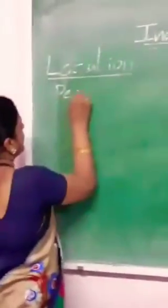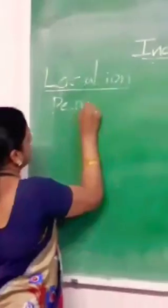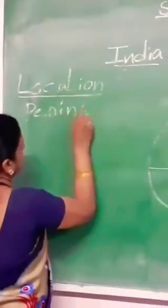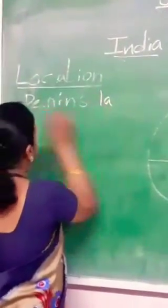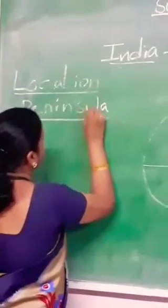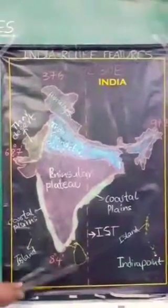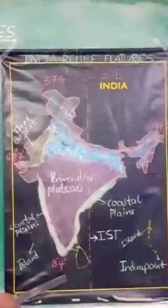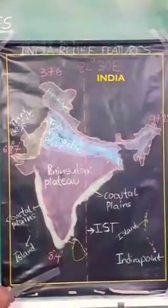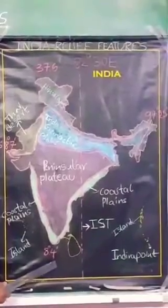Why is India known as a Peninsula? India is covered by water on three sides. To the East is the Bay of Bengal, to the West is the Arabian Sea, and to the South is the Indian Ocean. For that reason, India is known as a peninsula.